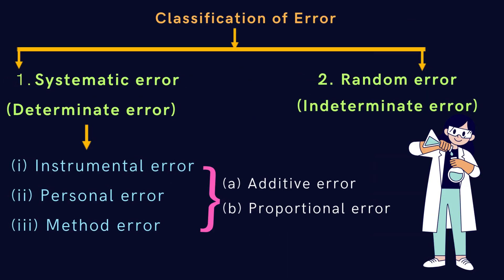Let's look at the classification of errors in chemical analysis. Errors can be broadly classified into systematic or determinate errors, and random or indeterminate errors. Systematic errors are consistent and reproducible; they can be identified and corrected.